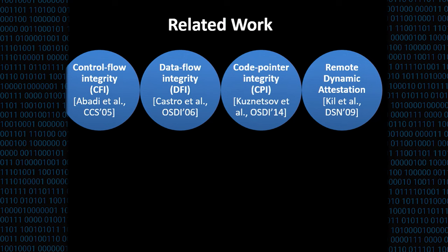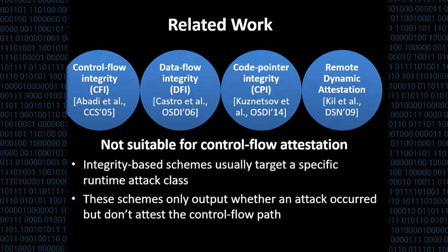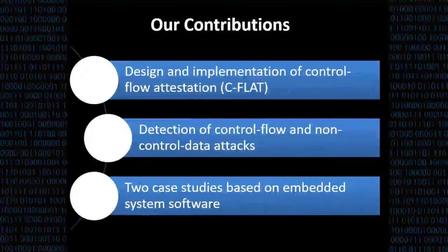Of course, there has been a lot of research in defending against these attacks. Prominent examples are CFI, DFI, CPI, and remote dynamic attestation. Although these schemes provide a very good protection against these attacks, they are not directly suitable for the sake of control flow and runtime attestation. First, integrity-based schemes usually target a specific runtime attack class, either control flow attacks or non-control data attacks. And second, they only perform checks, usually perform checks, on an isolated branch and see if that branch goes to a valid destination, where they miss the entire flow of the execution.